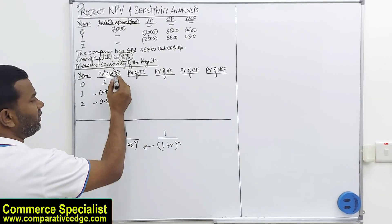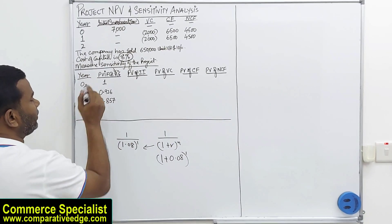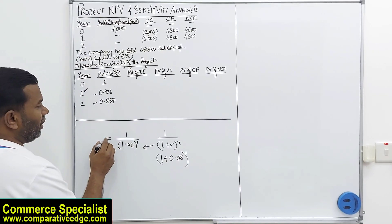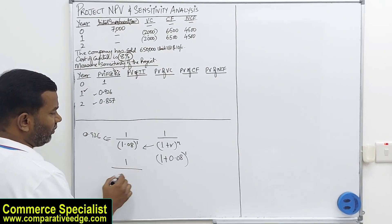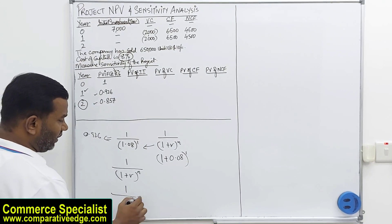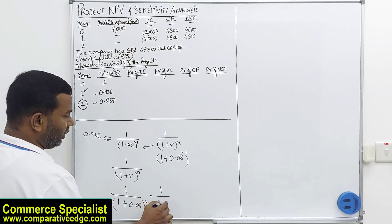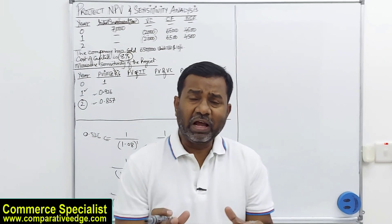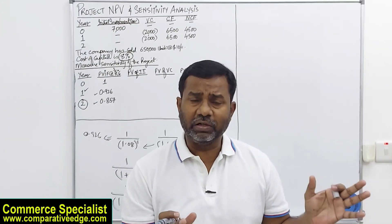The rate of interest is 8%, so it is 1 divided by 1.08 to the power 1, which gives 0.926. For year 2, it is 1 divided by 1.08 to the power 2, which gives 0.857. I have already explained this in detail in my previous video on capital budgeting and investment appraisal, so I highly recommend you watch that video as well.